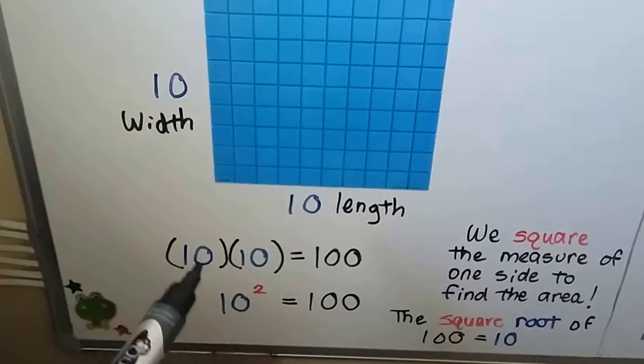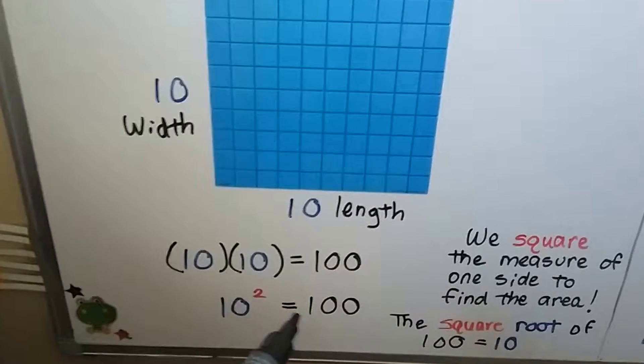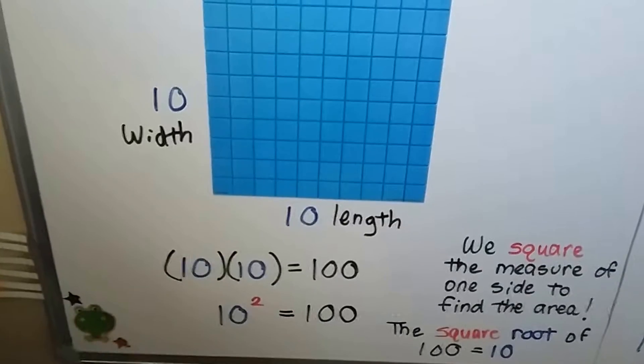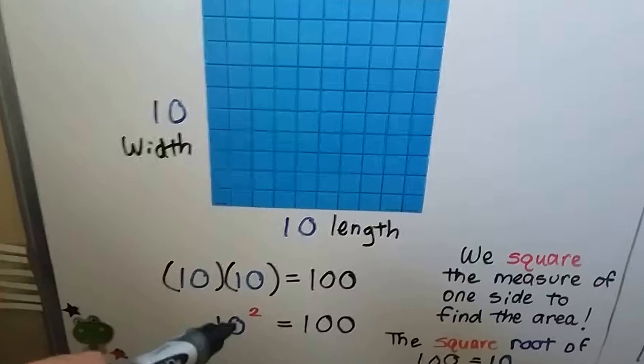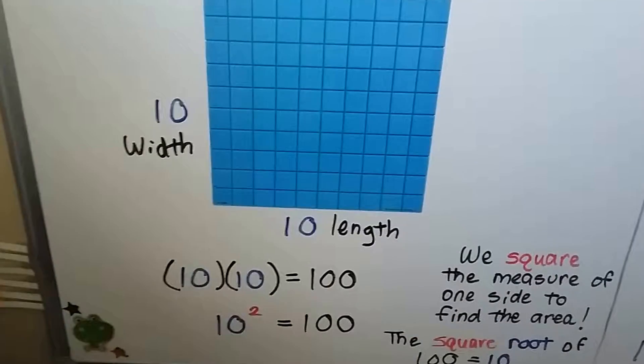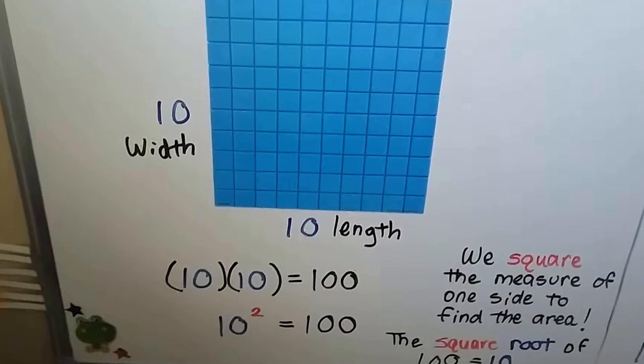10 times 10 would be 100, so the area would be 100. We could say, because it's 10 times 10, that we have 10 squared equals 100. We square the measure of one side. It's a 10, so we do 10 squared. We find the area, and the square root of 100 is 10.